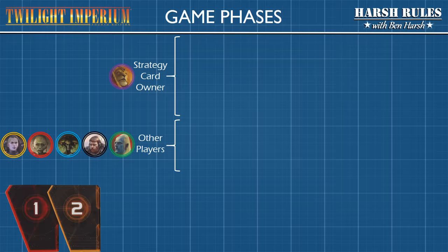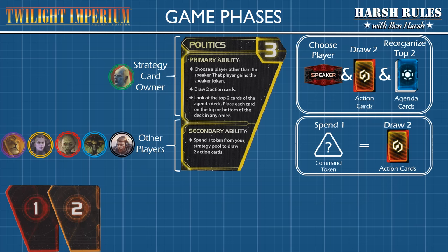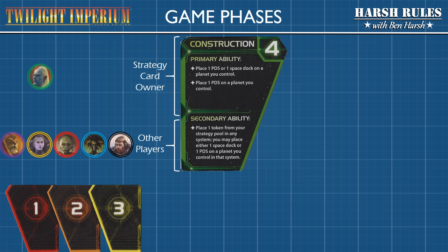Next is the Politics strategy card. With the Politics strategy card, the owner can choose the next speaker, draw two action cards, and reorganize the top two cards of the agenda deck. For the secondary ability, players can spend one token to draw two action cards.